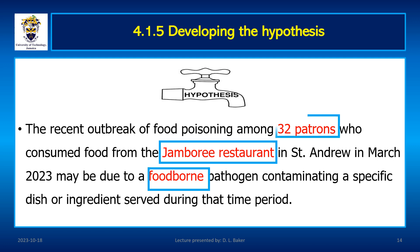Looking at the clustering: most of the 32 cases clustered around the Jamboree restaurant. Discussions must be held with local health officials and community leaders, as in the case of Snow with the parish fathers in London. Community leaders may not be technical experts, but they have a wealth of information and can provide valuable insights. Forging positive relationships with community leaders and members will help ensure cooperation and better outcomes. Information from lab tests and patient interviews also contributes to the development of the hypothesis.